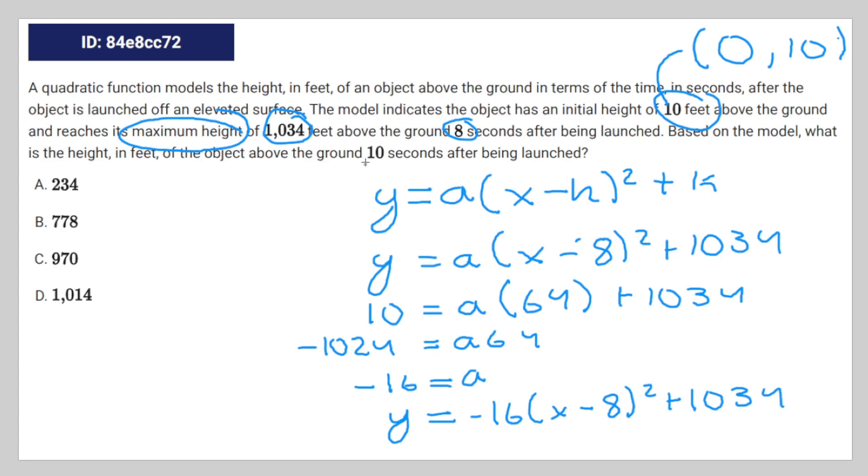And then they're asking for 10 seconds, so we're going to plug in 10 for x. So that's going to be y equals negative 16 times (10 minus 8) to the power of 2, which is 2 to the power of 2, which is 4, plus 1,034.